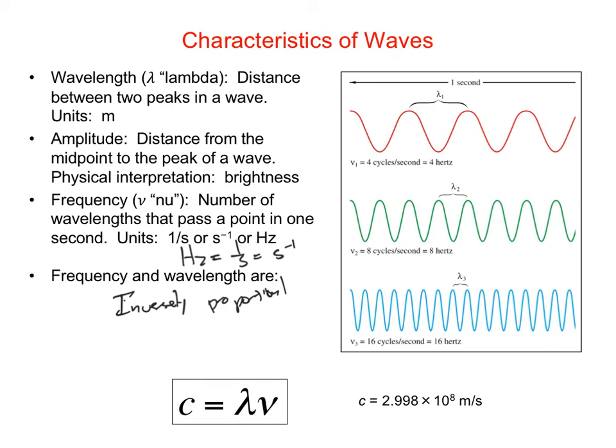For electromagnetic waves, we have an equation that relates the frequency and the wavelength, and they're related by the speed of light. So the speed of light for any electromagnetic wave is equal to its wavelength times its frequency: c = λν. For any electromagnetic wave, the speed of light is a constant: 2.998 × 10^8 meters per second.